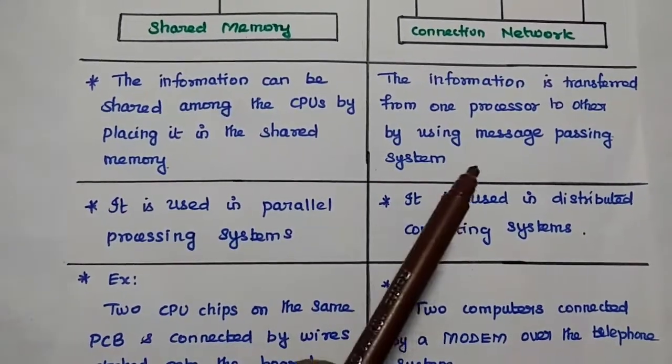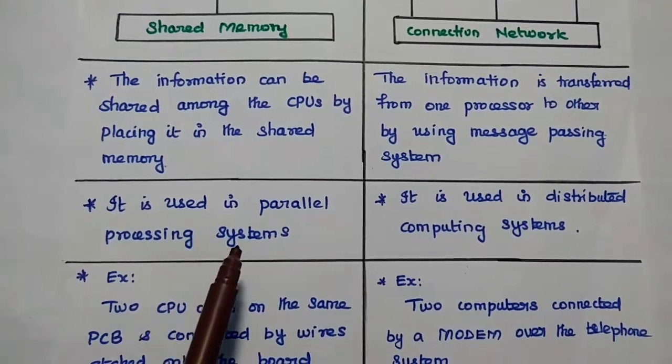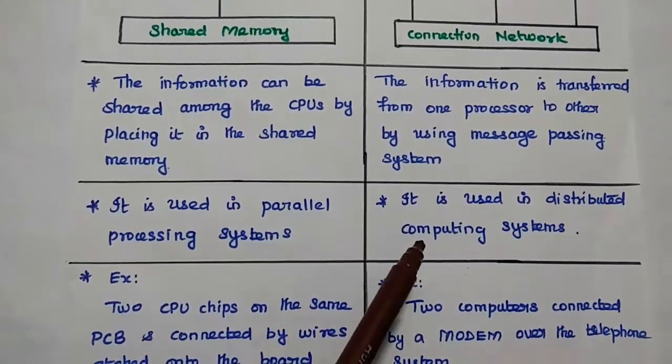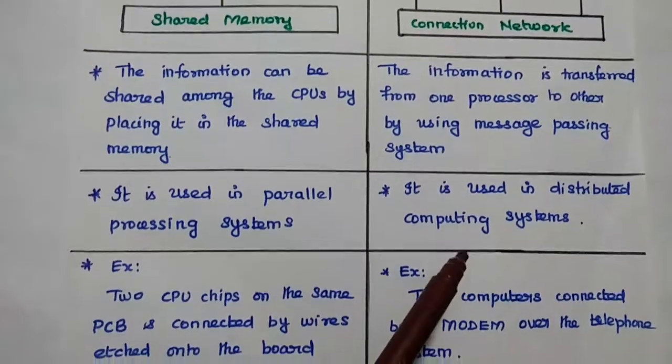For that we can use message passing system. So here it is used in parallel processing systems. This loosely coupled network is used in distributed computing systems.